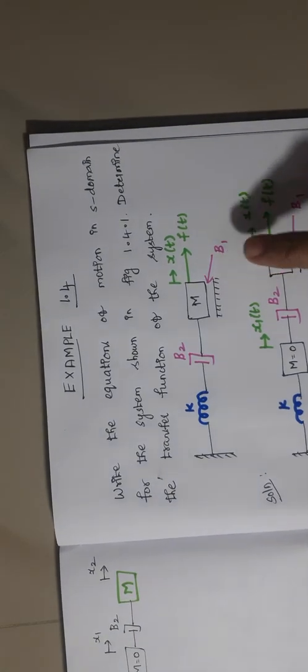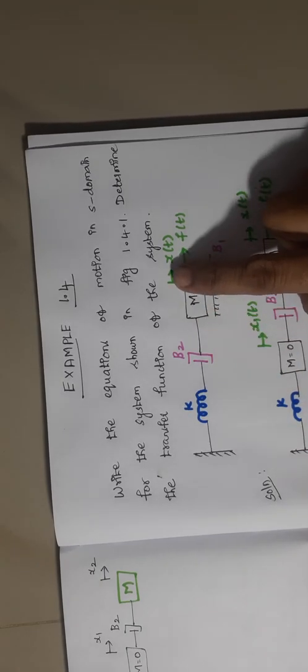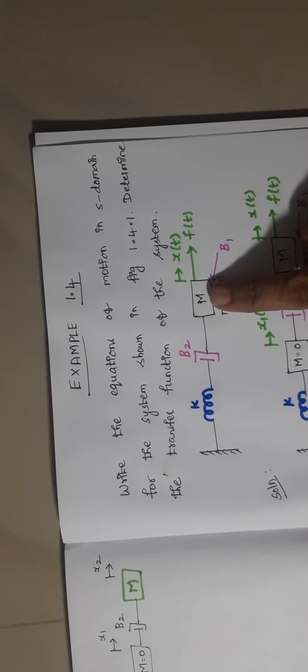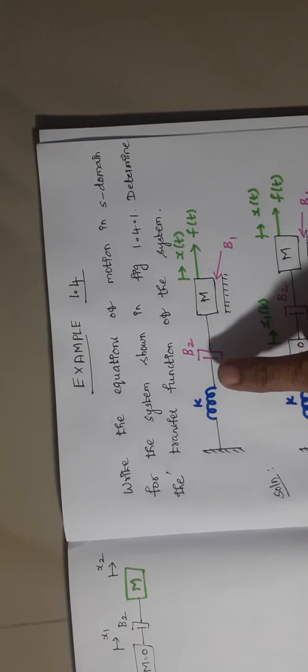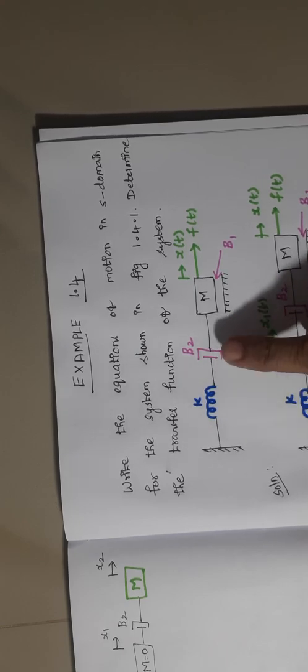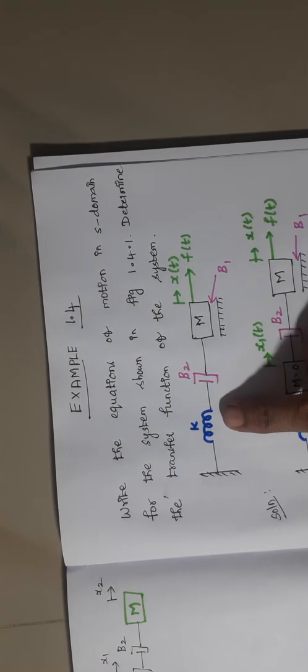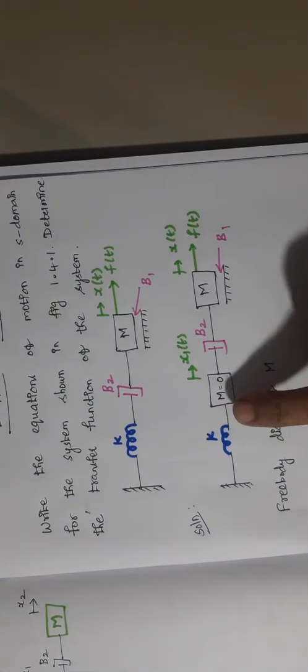This is the given problem. From this problem, it seems to look simple, but there is a small trick which we must know. This problem consists of only one mass, but here the main thing is that the spring and dashpot are getting directly connected. Spring and dashpot should not get directly connected — you can also refer to our previous problems. Suppose if a spring and dashpot, or any two elements, are getting connected like this, we should insert a mass M whose value is equal to 0.